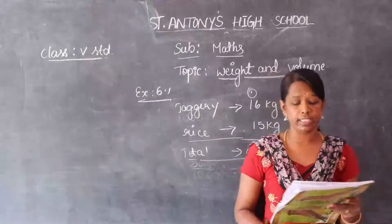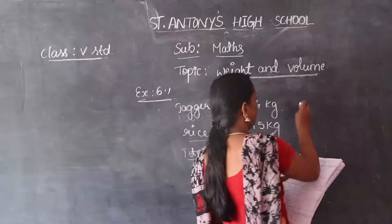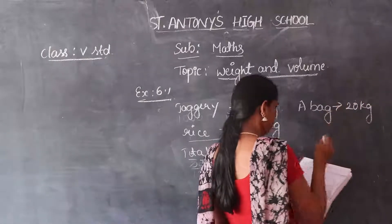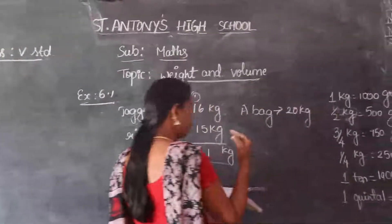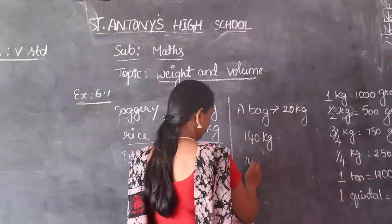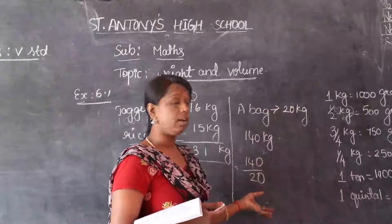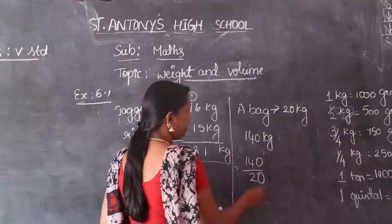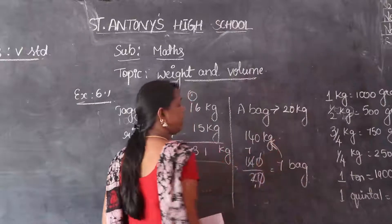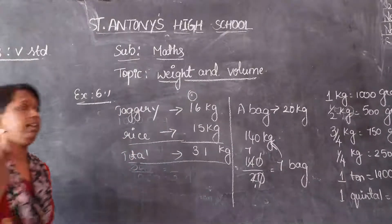A bag can hold 20 kg of rice. If 140 kg of rice is to be filled equally, how many such bags are required? We have to calculate how many bags are needed to fill 140 kg of rice. 140 divided by 20 — the zeros get cancelled, giving 14 divided by 2. Answer is 7 bags are needed to fill 140 kg of rice.